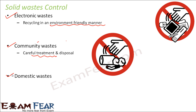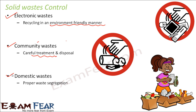Next comes domestic waste — waste from our houses. The first thing we can do is proper waste segregation. Our houses have vegetable waste, paper, plastics, and used electronic goods. We need to segregate them separately. All waste from the kitchen — used food, rotten food, fruits, vegetables, vegetable peels — should be kept together as they can be treated in a similar way.